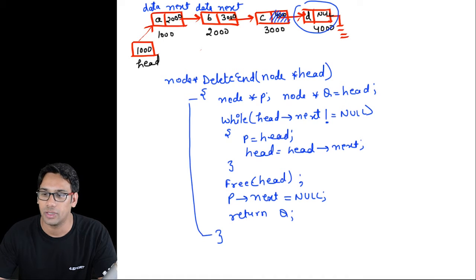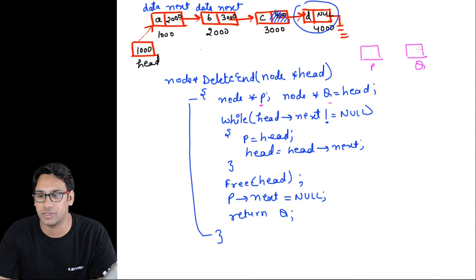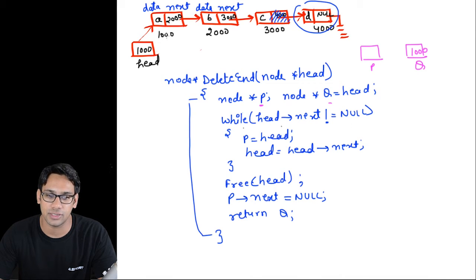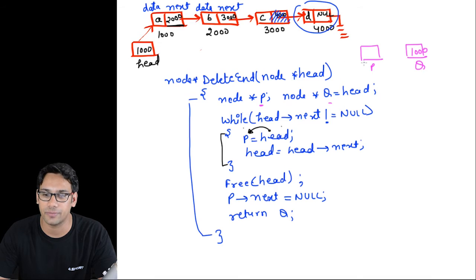Now let's see how this program works. Initially we have two pointer variables: p and q. q stores the address of head, so initially q stores 1000. The while loop checks: while head->next is not equal to null — that means as long as the next part of the node pointed to by head is not null, we execute the loop body. First, p = head, so p now stores 1000.